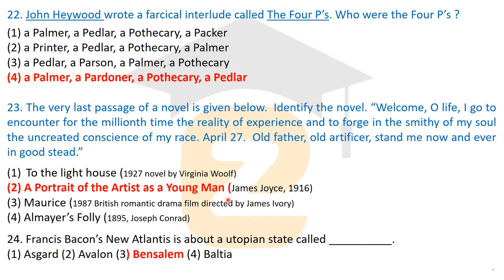The last question: Francis Bacon's 'New Atlantis' is about a utopian state — what is it called? The correct answer is Bensalem. That's all for today's video — this was the first part of the UGC NET English Literature July 2018 paper. In the next video, the second part will be covered, as there were 100 questions in the paper. Please stay connected at England Zone. Thank you very much for watching.